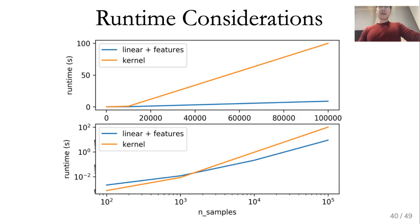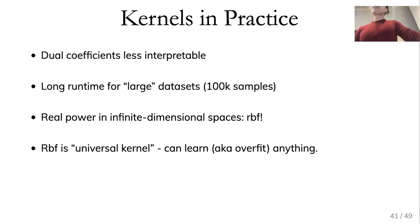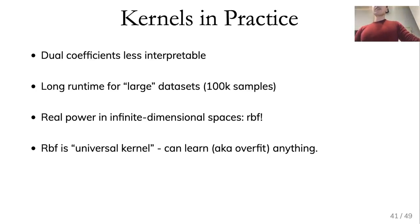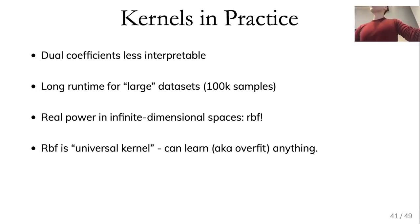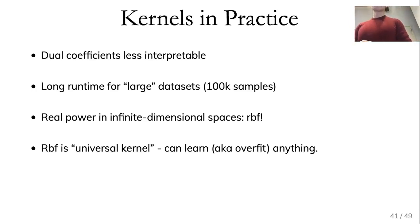Why use kernels then? The dual coefficients are less interpretable, and it's very bad for large samples as seen in the plot. But the really cool thing is that they have infinite-dimensional feature spaces — RBF is called the universal kernel, meaning it can fit almost everything. The linear kernel is very restrictive since it just does a hyperplane, but the radial basis function can fit anything, which we'll see in a few slides.